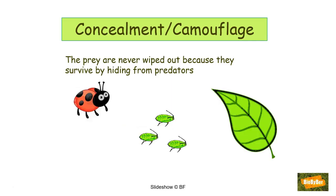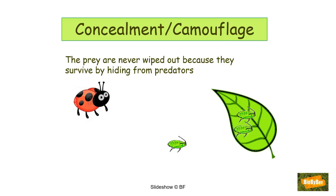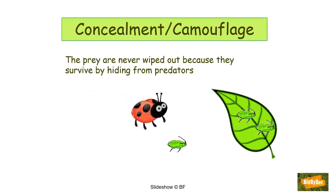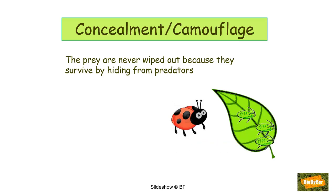Concealment or camouflage is another factor in predator-prey interactions. Prey are always prevented from being totally wiped out. When their numbers are low, they are able to camouflage themselves so predators can no longer find them easily. This allows a small population to survive, which is enough to allow the prey to re-establish themselves and increase again. In our example, a green fly can hide and camouflage itself due to its green colour.